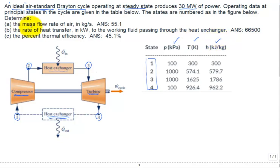So, determine the mass flow rate of air. This net power out of the cycle is given for this problem. It's 30 megawatts. Okay. To get that, it's related to the mass flow rate of the air going through each component of the cycle.